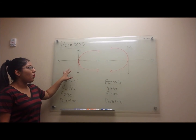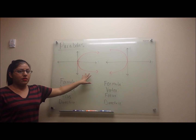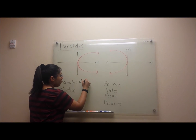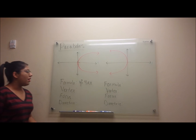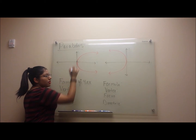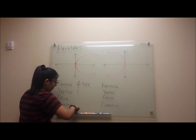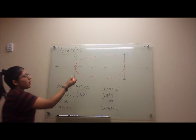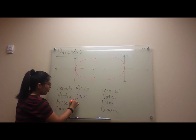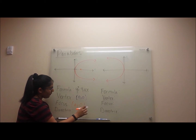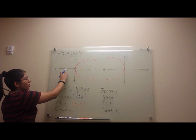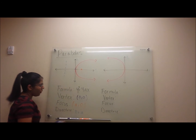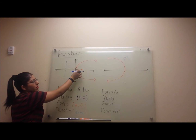Now let's discuss the graphs that open on the x-axis. This one opens on the positive side. The formula for this one is y squared equals 4ax. The vertex is still centered at the origin, so it is 0, 0. The focus for this one is now placed on the x-axis as well, so it will be a, 0. The directrix will now be on the negative side of the x-axis, which means x equals negative a. The same distance from here will be the same distance from here.